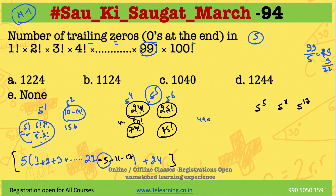For 49 factorial, we have 5 raised to power 10, and for 50 factorial we have 5 raised to power 12. So we missed 11. Similarly, for 74 to 75 factorial, we are going to miss 17 — we have 5 to the 16 and 5 to the 18, but 17 is missed. Now we need to solve this and get the answer.